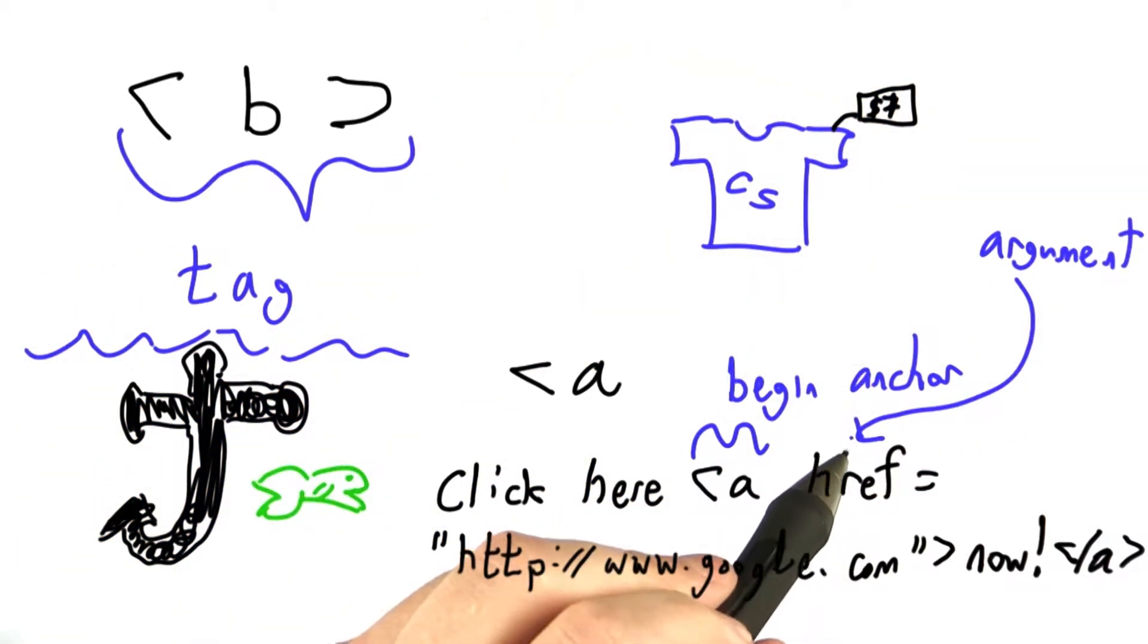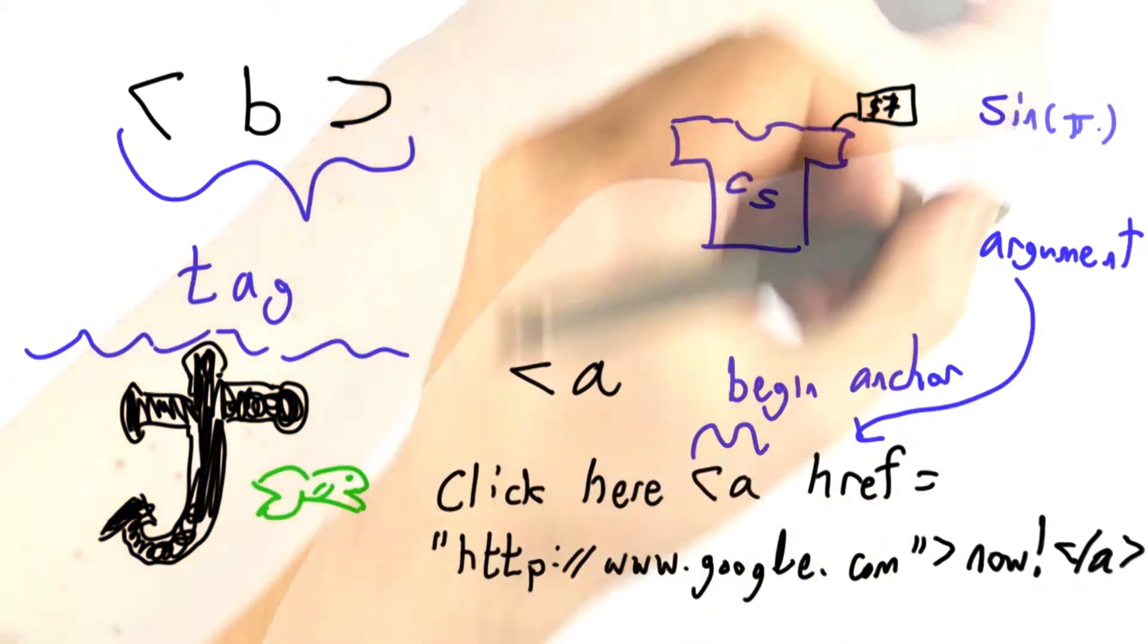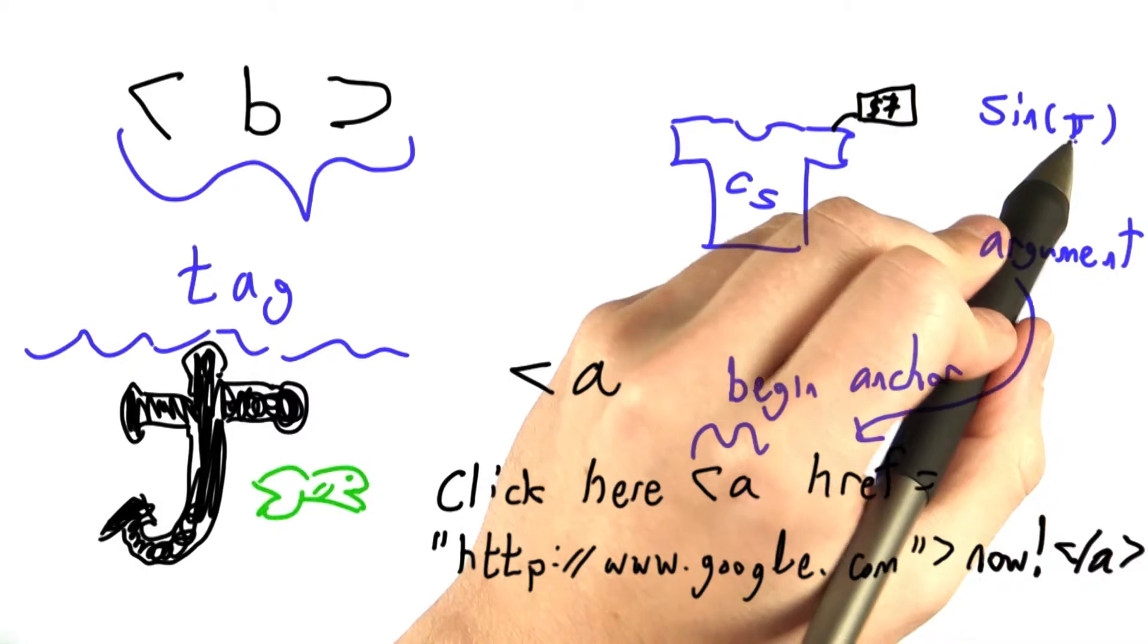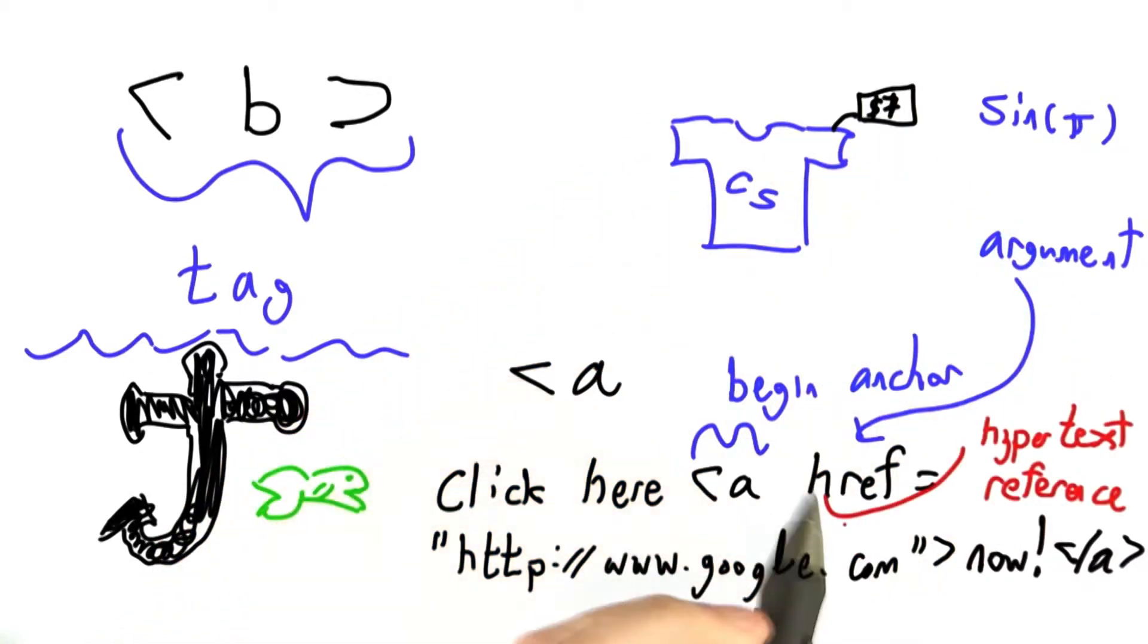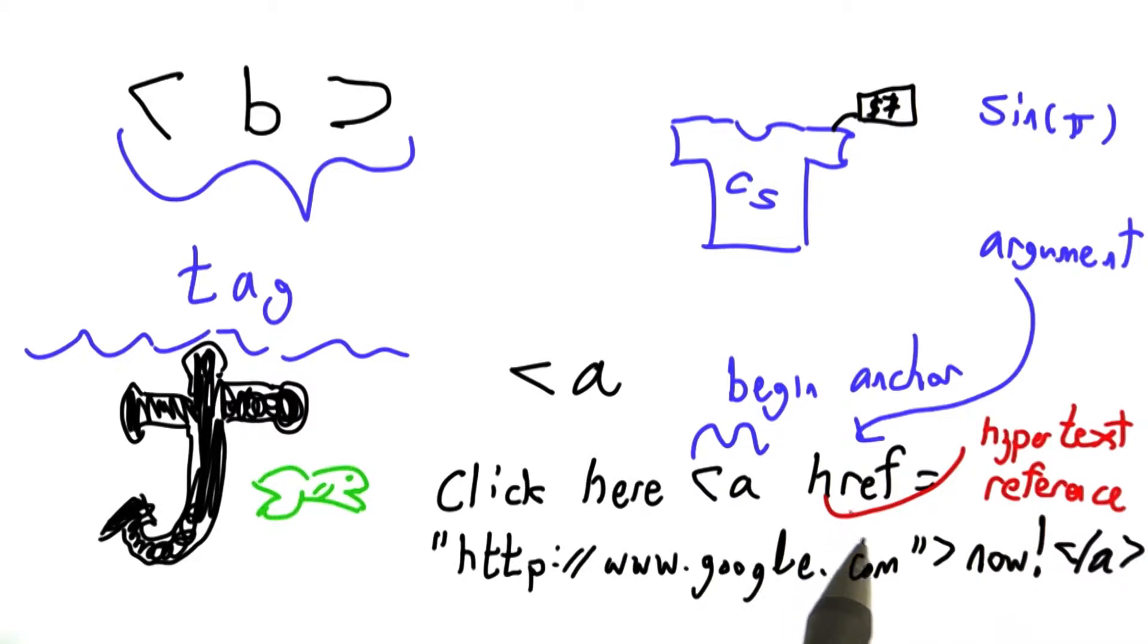And this means pretty much the same thing it did when we were talking about functions in Python or math. Here the argument to my sine function is pi. Here the argument or modifier for my anchor tag is href equals, and this stands for hypertext reference, the target of this link.